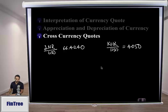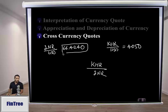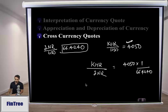To get a direct rate between INR and KHR with KHR in the numerator and INR in the denominator, we use basic algebra. Since we want INR in the denominator, we invert the INR/USD quote and keep KHR/USD as is. The answer is 4050 × (1/66.4240), and that result is the cross-currency quote.